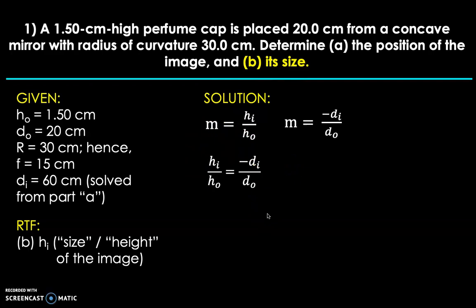Does that equation look useful? Yes, because h sub i, which is the RTF, is there. And all these variables, if you haven't noticed, are actually known. We know d sub i, we know h sub o, and we also know d sub o. Now of course we want this equation to look linear. We don't want it to be in fractional form. So we're gonna do simple cross multiplication so it will be linear. So d sub o times h sub i will give us this and then h sub o times negative d sub i will give us this. Of course, you can switch this, commutative property of multiplication.